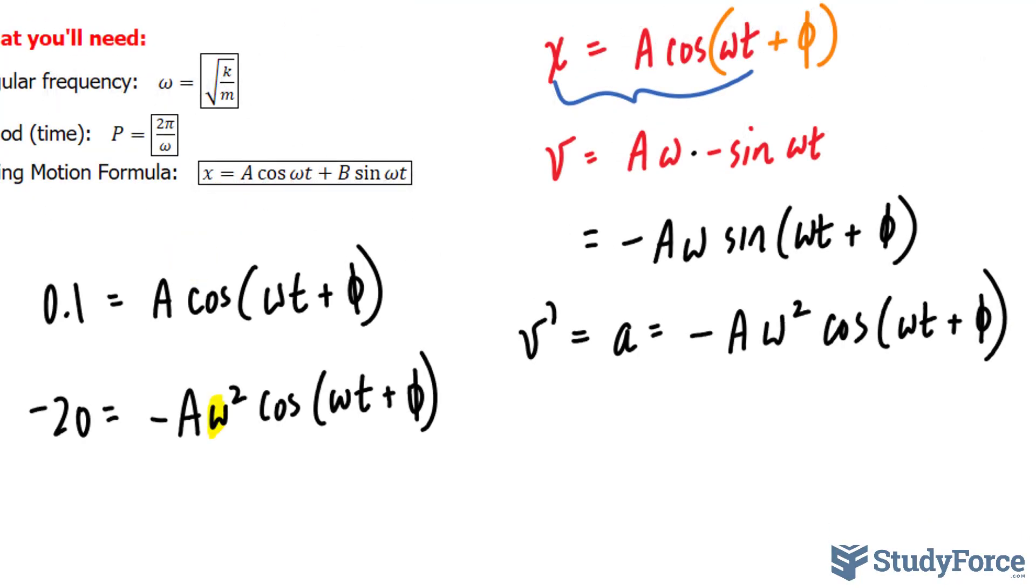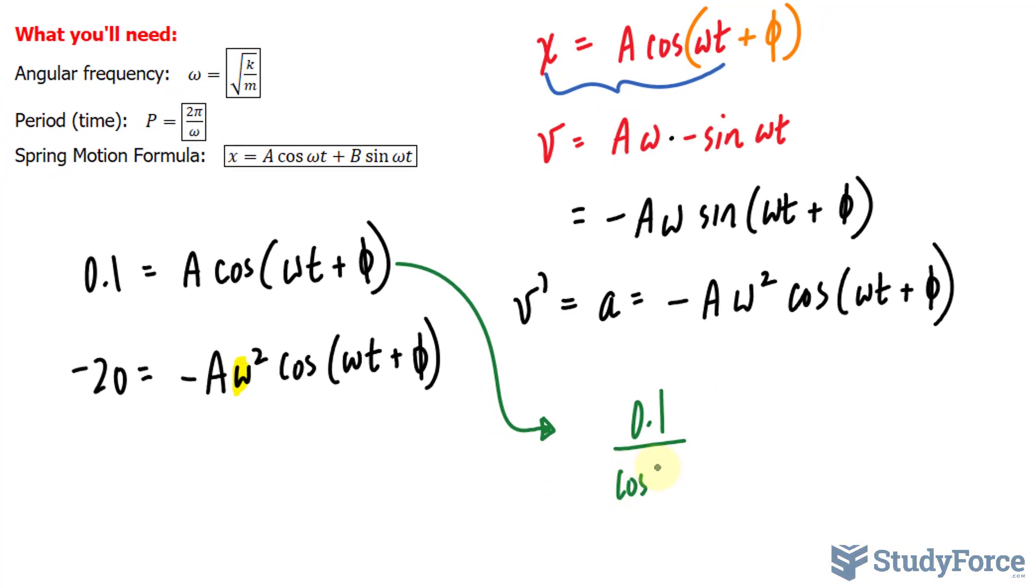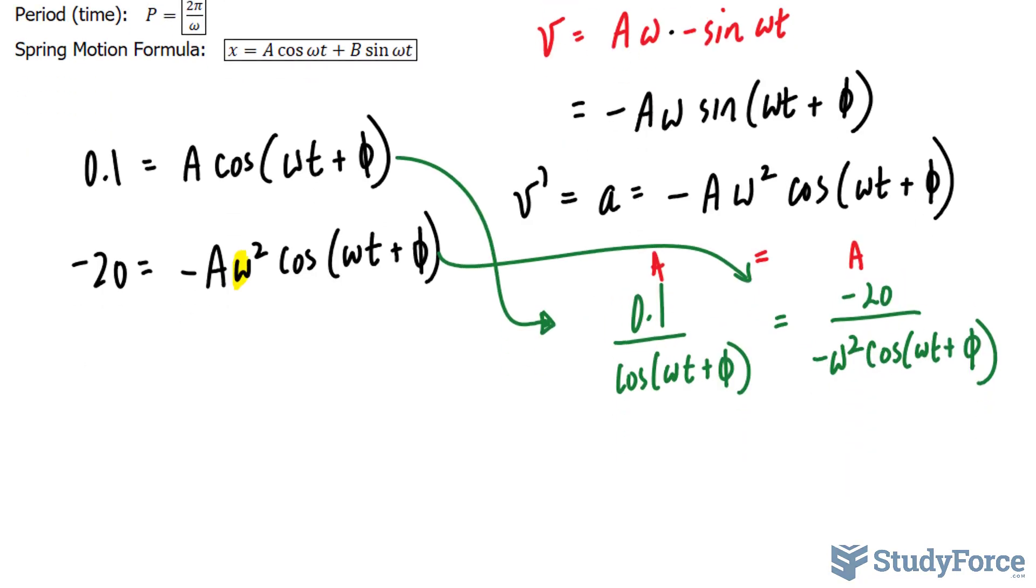That's not hard to do. We solve for A in each of these equations and set them both equal to each other. For this very first equation, solving for A is 0.1 over cosine and its angle. For this equation, we have negative 20 over negative omega squared cosine omega t plus phi. Remember, that's A for the first equation. That's A for the other.